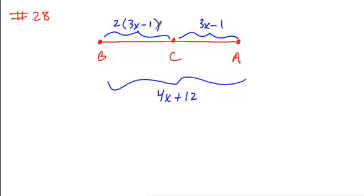So when you're looking to solve for the different parts of this figure, what we can do here is use segment addition. If we add these all together, 2 times 3x minus 1 plus an additional 3x minus 1, we can say that BC plus CA has to equal the whole BA.